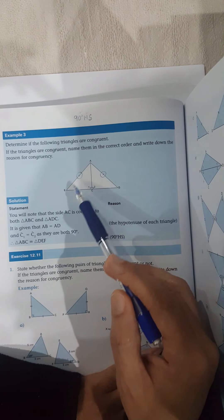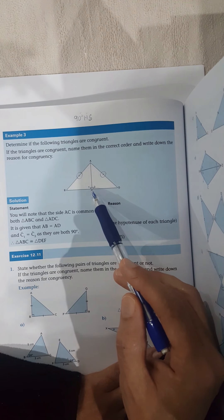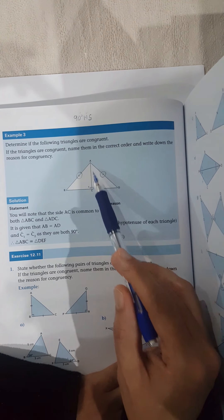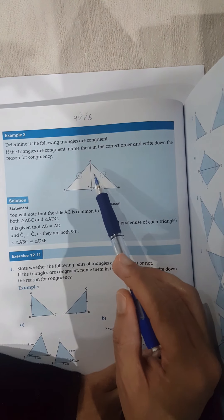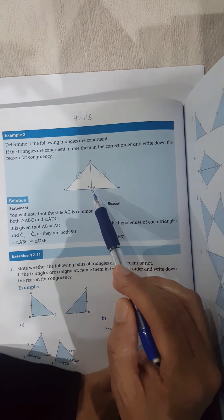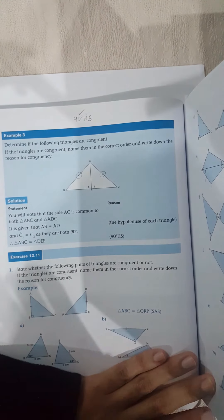So in triangle ABC, you can see that C1 is 90 degrees, and in triangle ADC, you can see that C2 is 90 degrees. So I've proven that I have two 90 degrees.